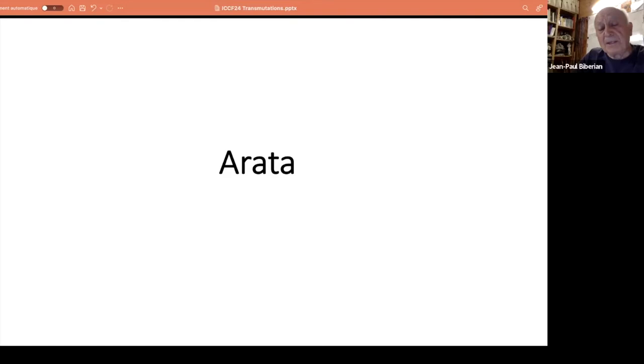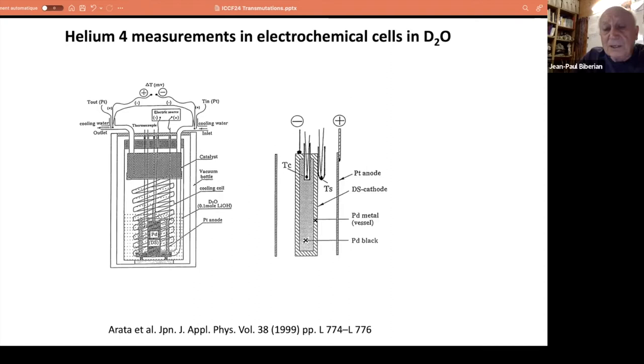Another very important player in this field is Arata, a Japanese scientist, and he had a very smart design. He developed the double cathode, which is actually a hollow tube of palladium filled with palladium black. Palladium black is a powder of palladium, so the whole thing is sealed. Then he does electrolysis—this is a platinum anode—so he does electrolysis with heavy water. When heavy water dissociates at the surface of the cathode, deuterium ions are produced, and they diffuse inside the wall of the tube, go inside the powder, and build up the pressure inside, loading the palladium black with deuterium.